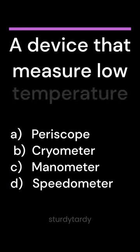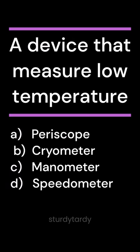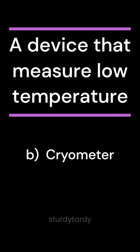Answer: C. Rain gauge. A device that measures low temperature. A. Periscope. B. Cryometer. C. Manometer. D. Speedometer.